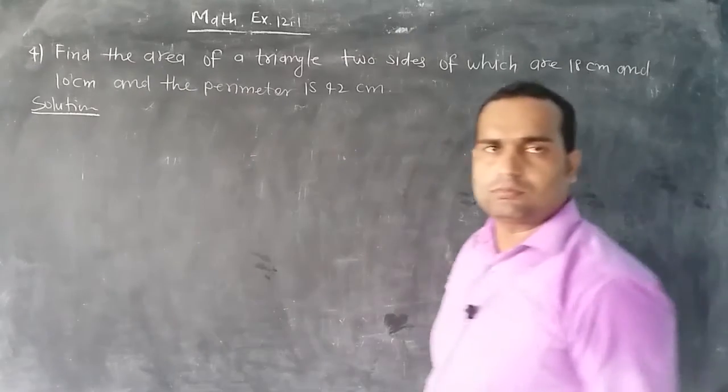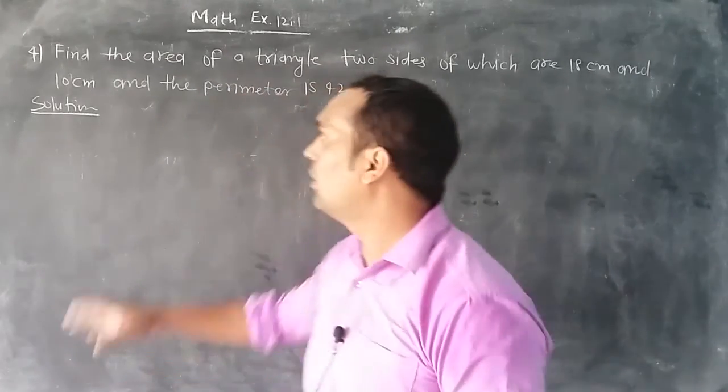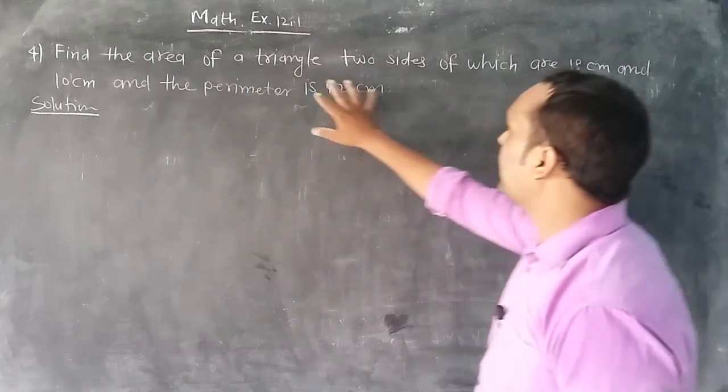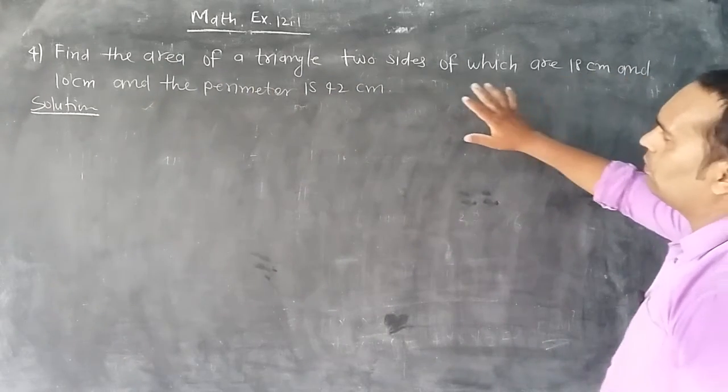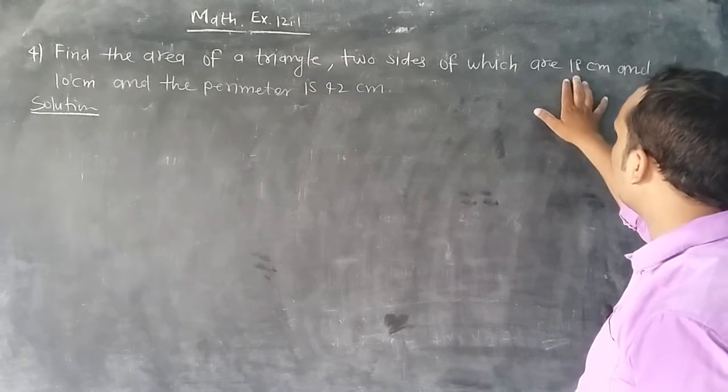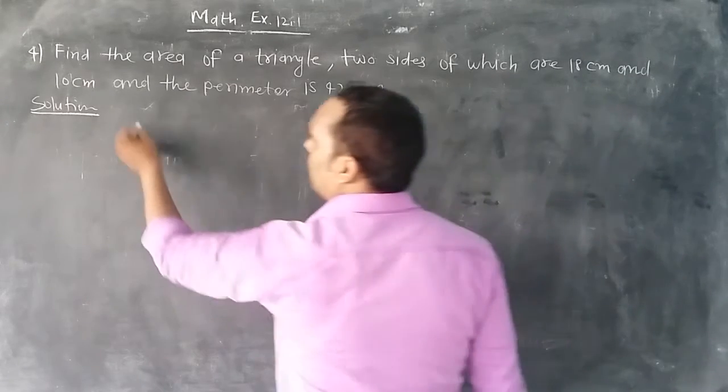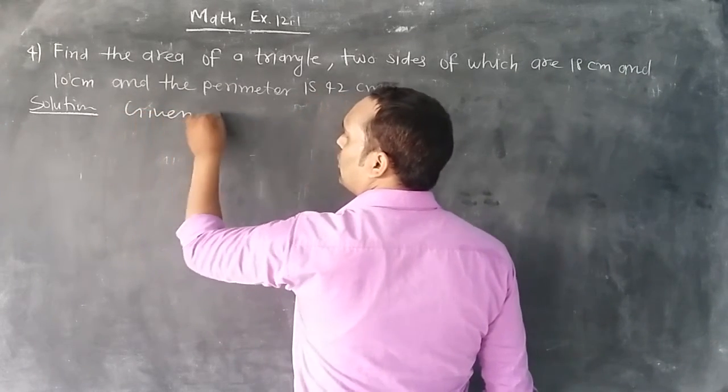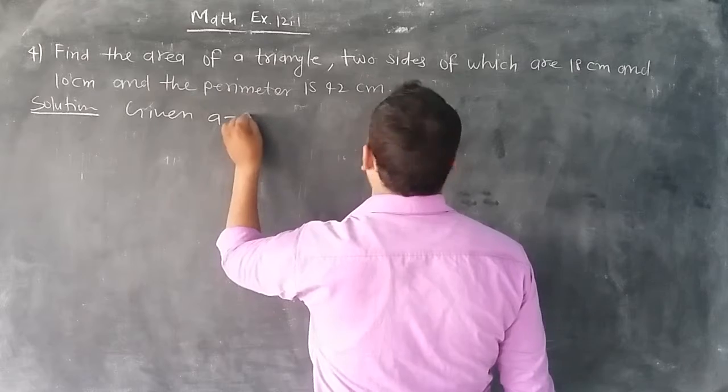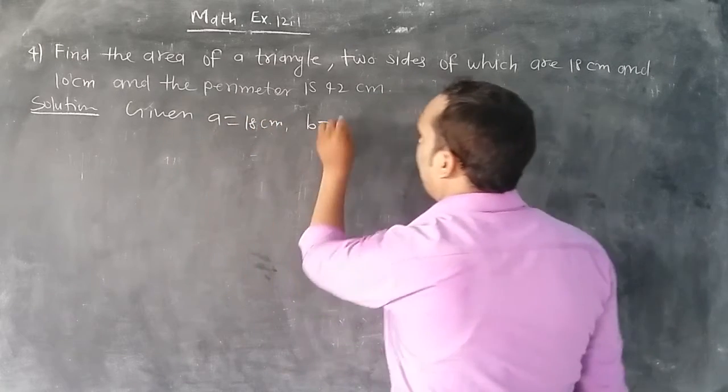Now question number 4. In this question, find the area of a triangle, two sides of which are 18 cm and 10 cm. Here we have given a equals 18 cm, b equals 10 cm.